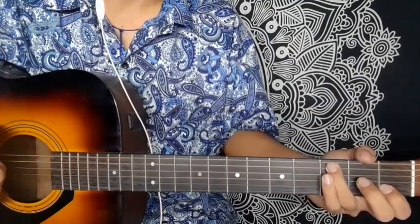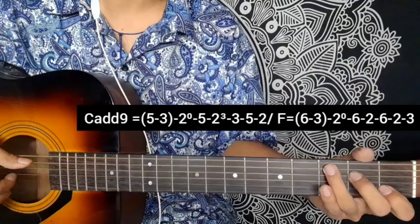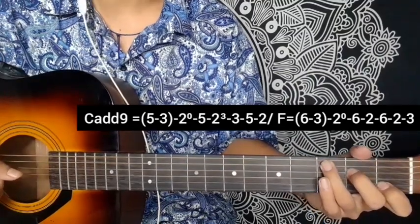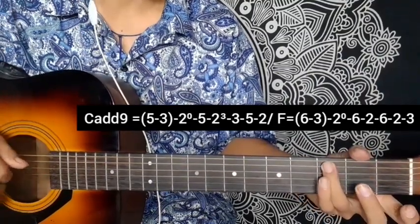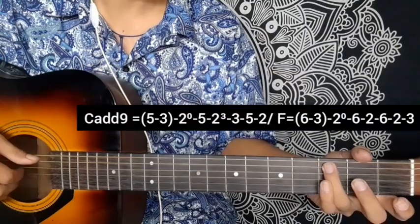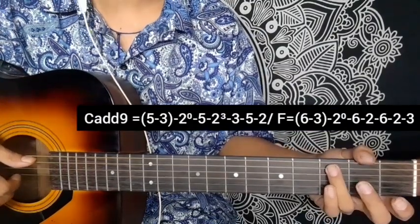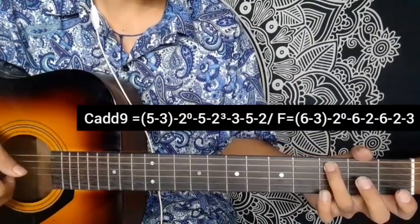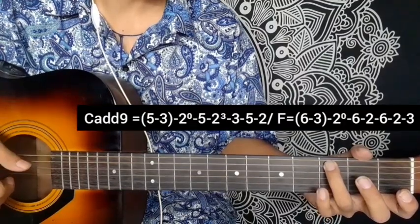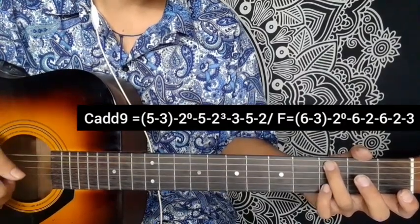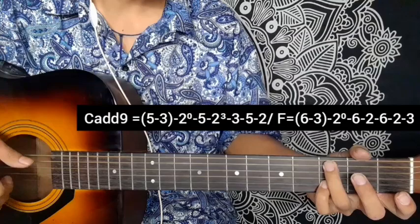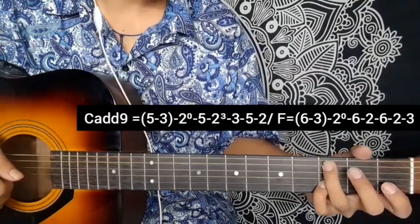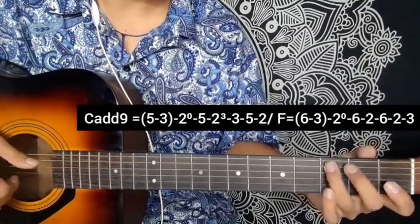Next we go to C add 9. This goes to C major chord on the fifth string. Again, 5-3 on first string, pick, then 3-5 second string open, 3-5, press 3-5 on second string first, pull off.